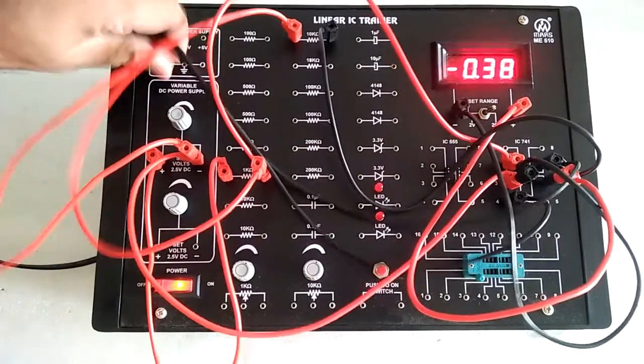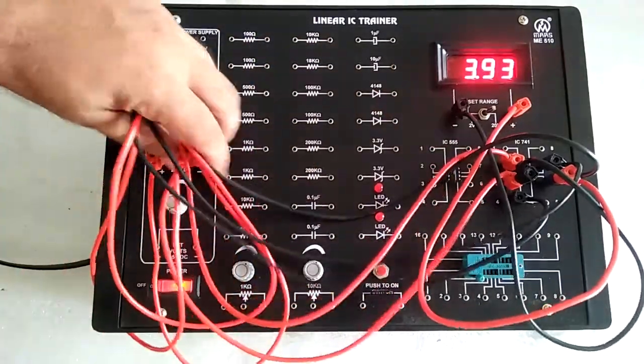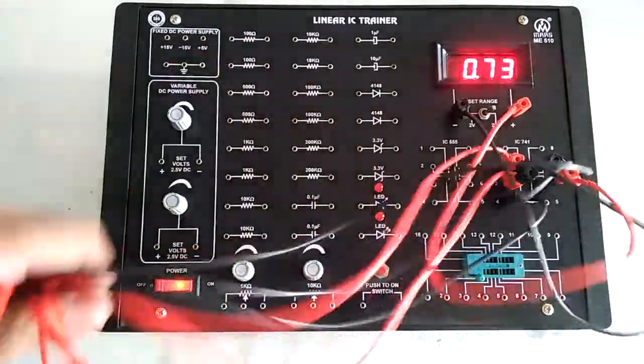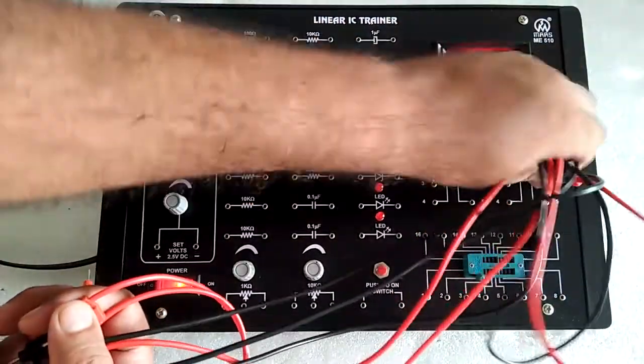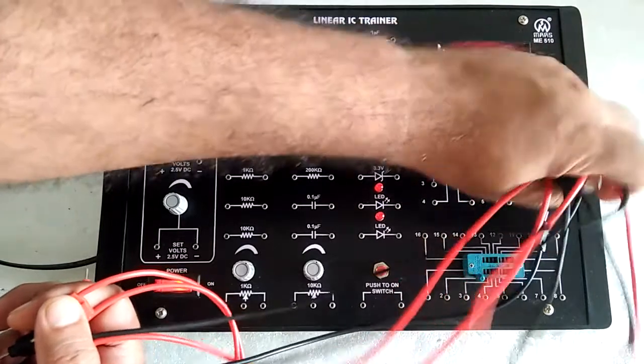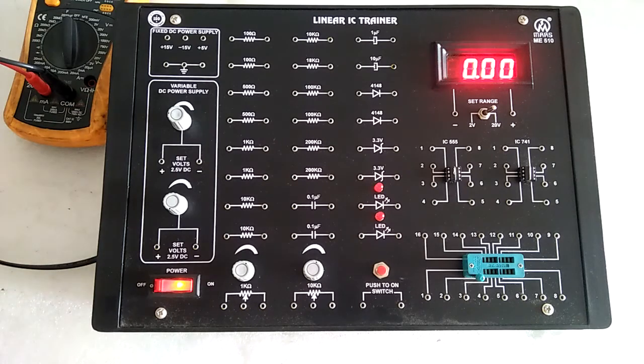Suppose you want to find the characteristics of an LED. You require an input supply and voltmeter, which is present. For current measurement, you need an extra optional multimeter having DC current range.